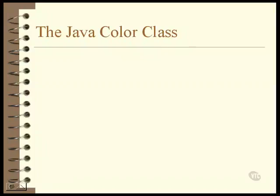This lesson is an introduction to colors. Colors in Java are set by creating a color object and then storing the object in the graphics object. Once this is done, everything painted to the window using the graphics object is in the specified color.